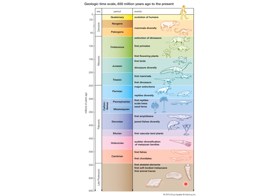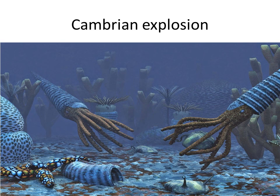The first really complex life forms started to appear during the Cambrian period — a time when very many new life forms came to exist, which we call the Cambrian explosion. Most organisms lived in the sea; there were a lot of plants and animals, and life flourished on Earth. In a relatively short period of time, many new species developed.